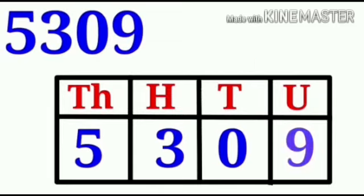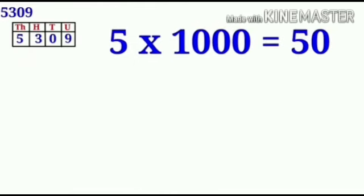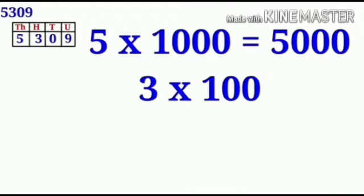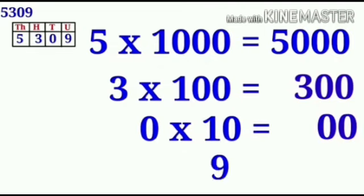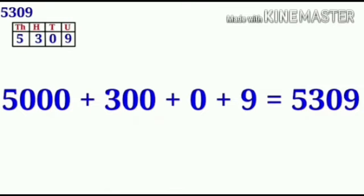Five thousand, three hundred, nine. In this number, five is under the thousands place and three is under the hundreds place. There are no tens, so we write zero under the tens place. Nine is under the units place. Five times 1000 is equal to 5000. Three times 100 is equal to 300. Zero times 10 is equal to zero. Nine times one is equal to nine. So children, 5000 plus 300 plus zero plus nine is equal to 5,309.